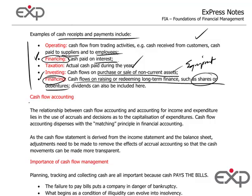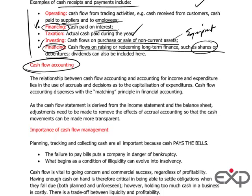All of this adds up to tracking the movement of cash through the business. Cash flow accounting is almost a parallel system of looking at cash incomes and cash outflows from the business, which is quite distinct from financial accounting of income and expenditures, which works on the accruals basis — in turn based on the matching principle in financial accounting.